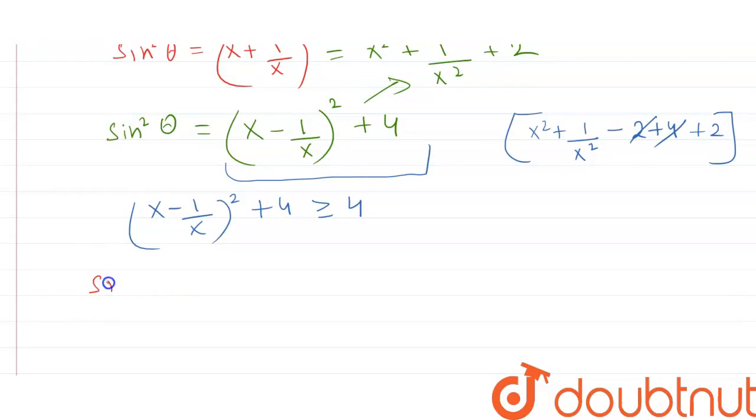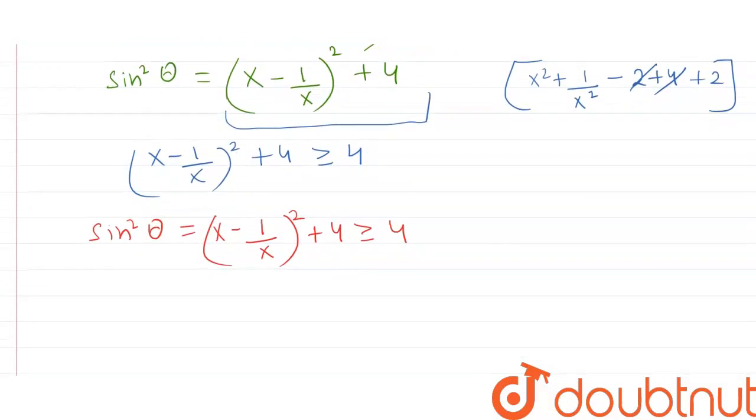From this, we can conclude that sin² θ = (x - 1/x)² + 4 greater than or equal to 4. This implies sin² θ should always be greater than or equal to 4.